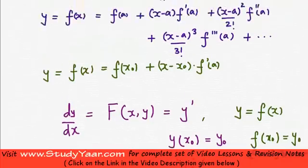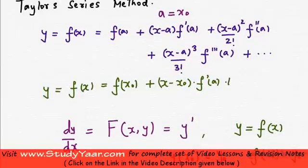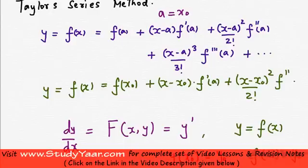And then you are going to have more terms: (x - x₀)² upon 2 factorial f''(a) or f''(x₀). This is also x₀.